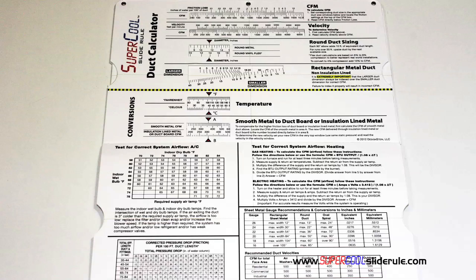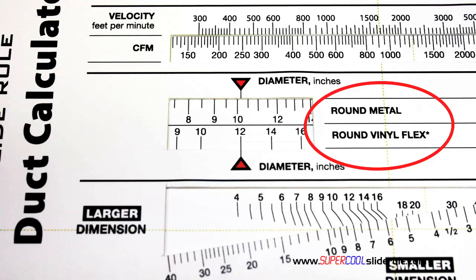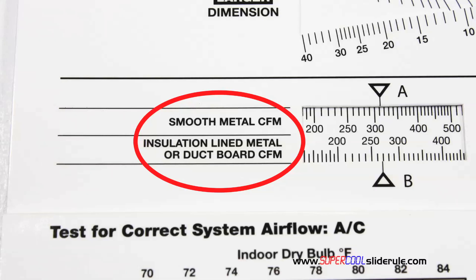Inside is packed with even more information. It performs sizing of both metal and flexible duct. It has the only direct reading conversion from smooth metal to insulation line metal we've ever seen. The majority of technicians have never been taught that if the insulation is on the inside of the ductwork you cannot size it with a regular duct calculator.